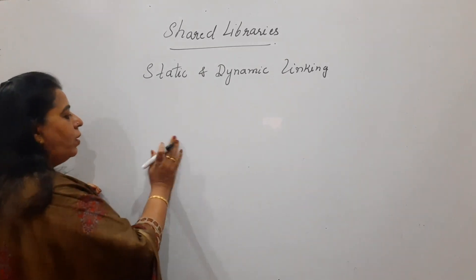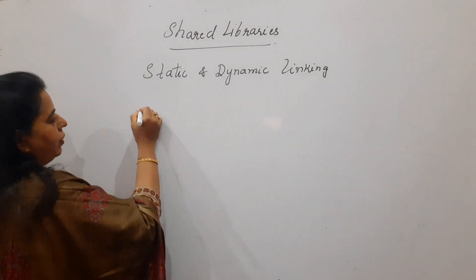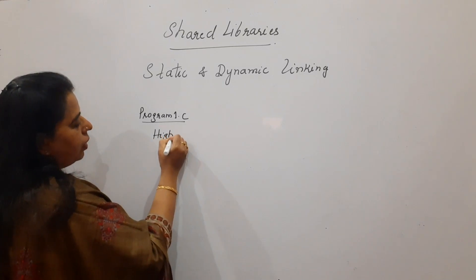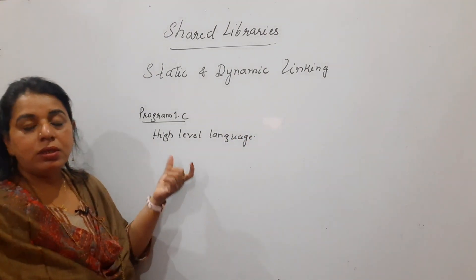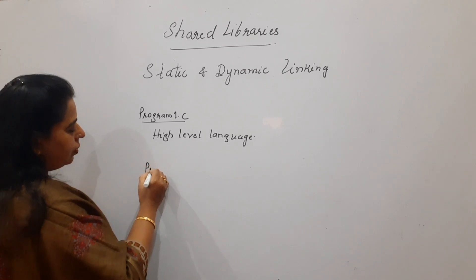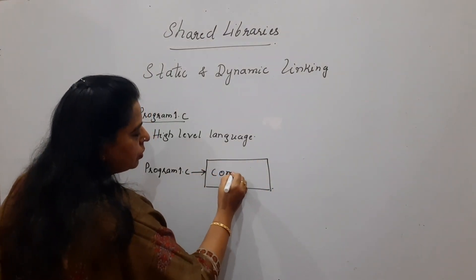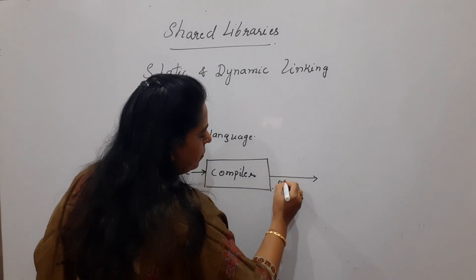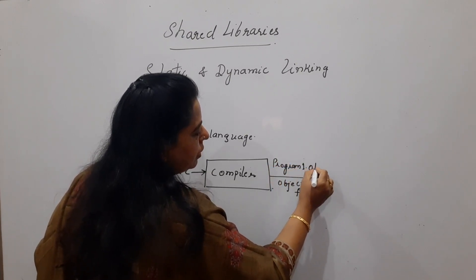To explain static and dynamic linking, I'll start with a concept you've all done since your first semester — programming in C or any other language. You type a program, say program1.c, which is a high-level language. The computer does not understand high-level language, so it gets converted to low-level object code. The program goes as input to the compiler, which produces an object file with extension .obj.